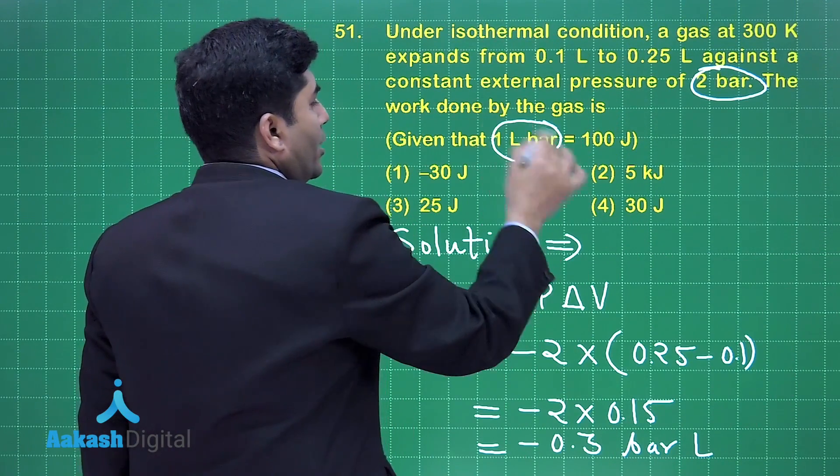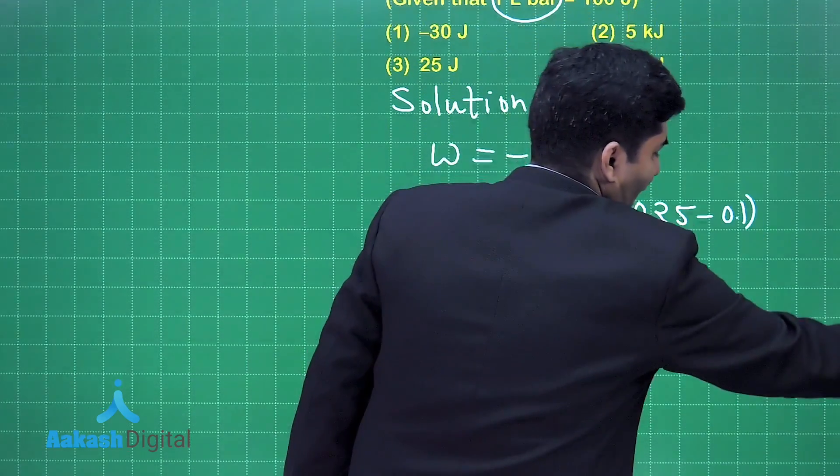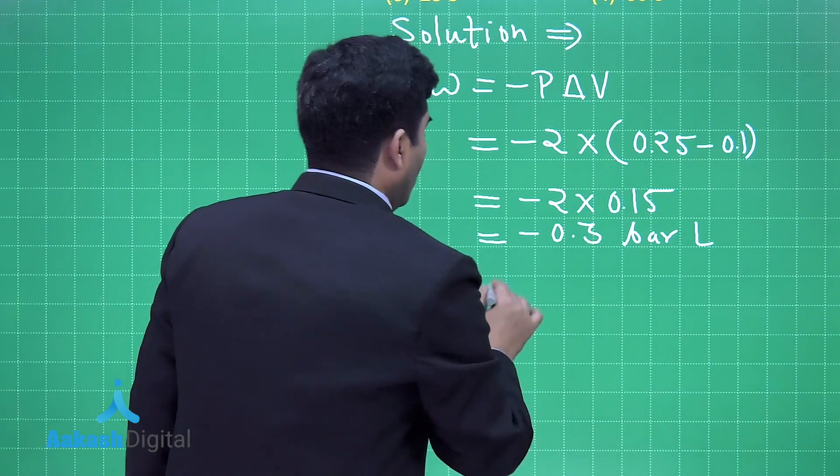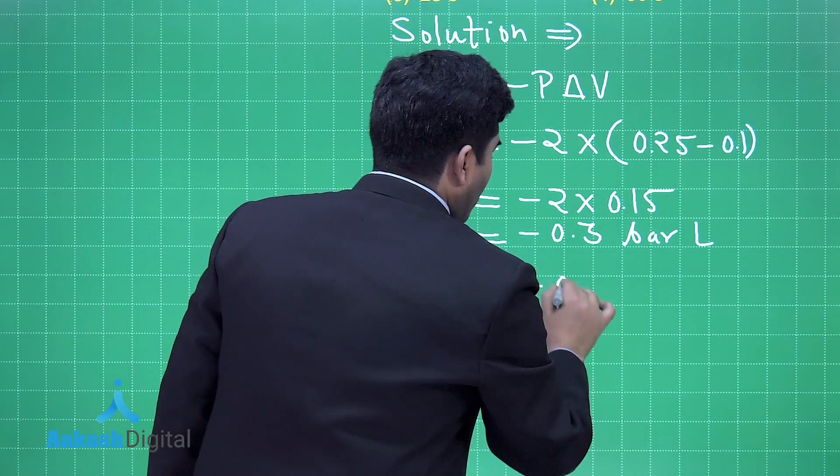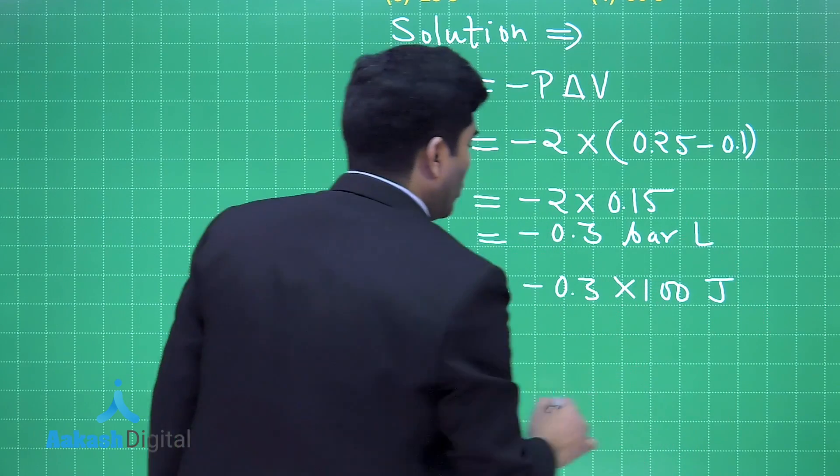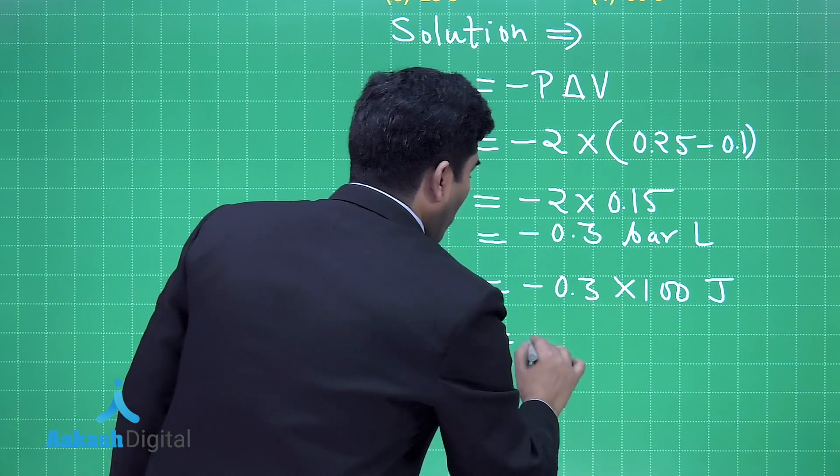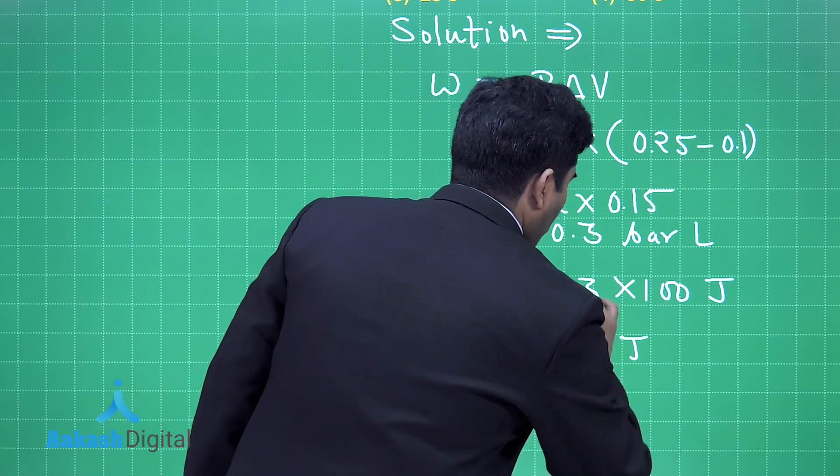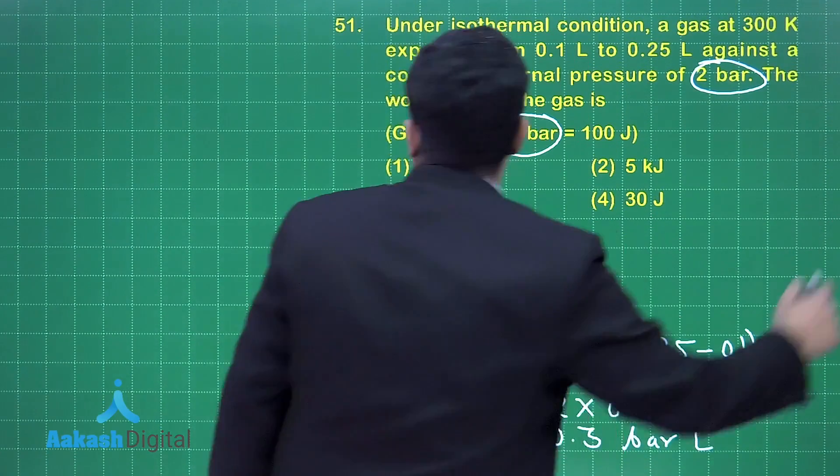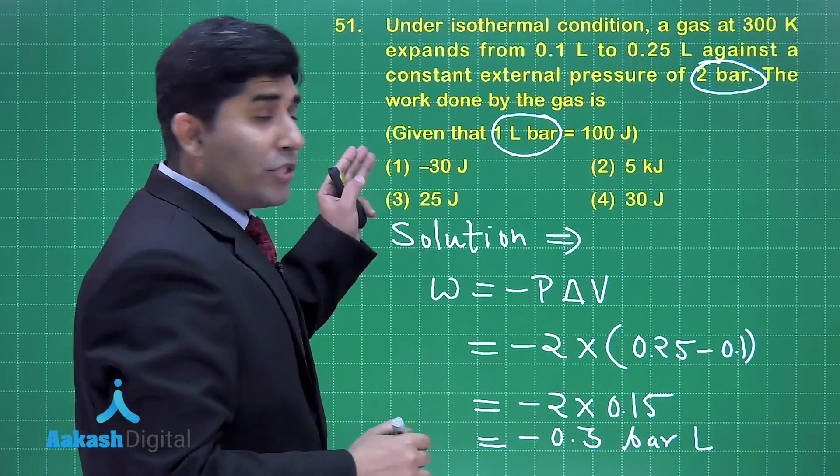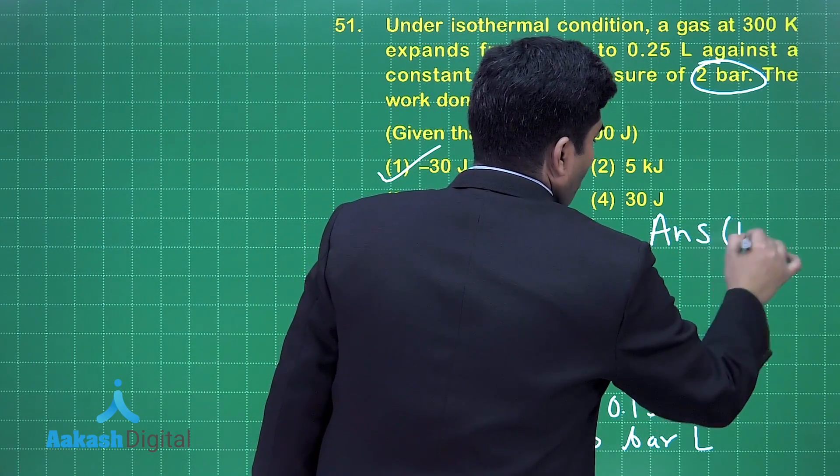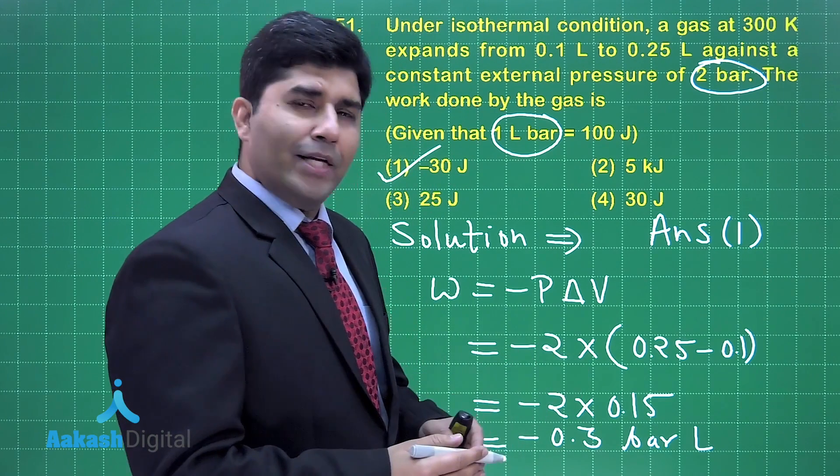And the relation is given to us: one liter bar is equal to 100 joule. And if it is correct then we have to multiply by 100. That's why it is equal to -0.3 × 100 and now it is in joules, that's why it is equal to -30 joules. So this is the final answer. Let us check in which option it is given. It is given in the first option, that's why the answer is option number one. Let's move on to the next question.